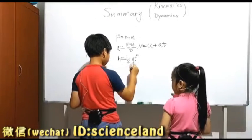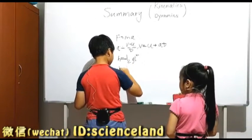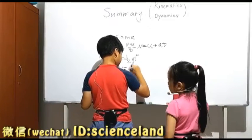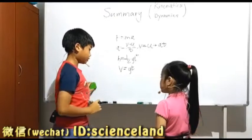And the last formula, also only for free fall. V equals gt. Okay.